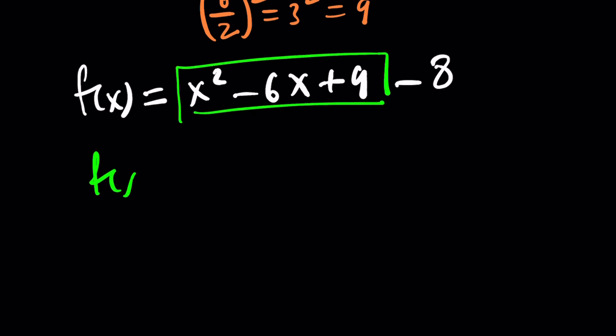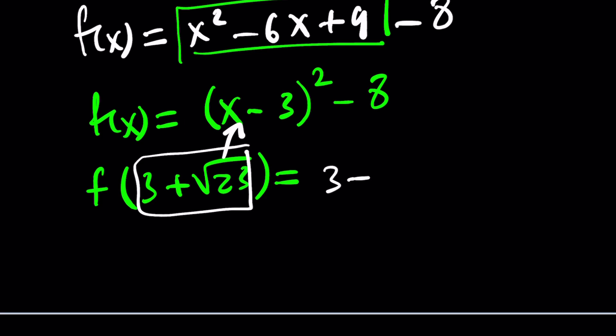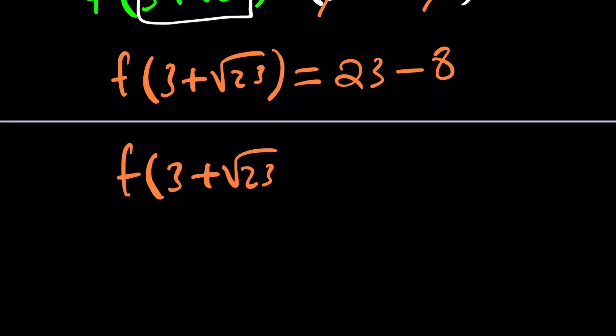This is awesome. Let me show you why. Remember, we're looking for f of 3 plus root 23. So when you substitute this number for x here, you get 3 plus root 23 minus 3 and then quantity squared minus 8. Guess what? The 3s cancel out. And that's the beauty of the second method. So you get f of 3 plus root 23 as root 23 squared, which is 23 minus 8. So to keep a long story short, f of 3 plus root 23 is equal to 15. And that happens to be the answer.